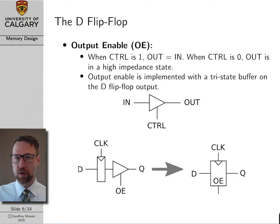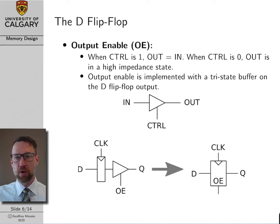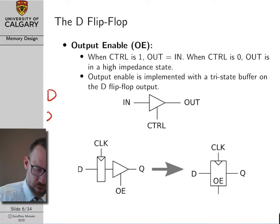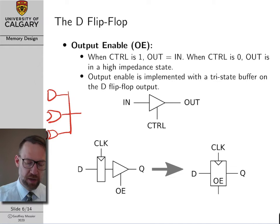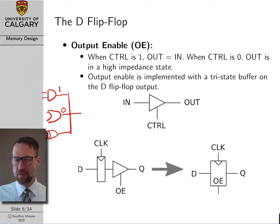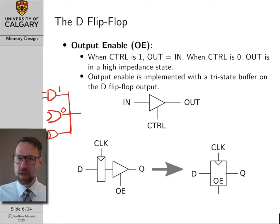To be useful for our data memory design, we need to add two enhancements to our basic positive edge-triggered D flip-flop. The first enhancement is to add an output enable. In general, it's a bad idea to connect a number of digital outputs together — if one output tries to output a 1 and another tries to output a 0, the two outputs would fight. One would try to pull the voltage high and the other would try to ground it, resulting in an indeterminate voltage level causing problems in your circuit. You only ever want one output driving a digital bus at one time.